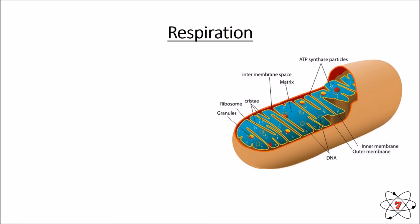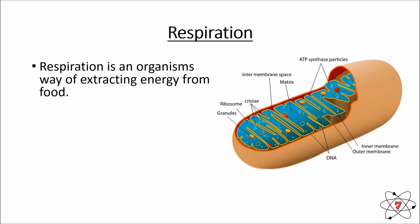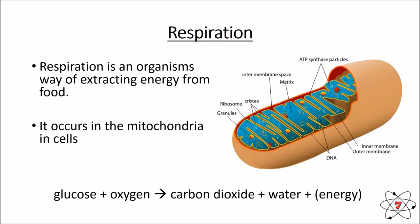Respiration. All living things have a chemical reaction called respiration. Respiration is an organism's way of getting the energy we need from our food. That food normally comes in the form of glucose. It always happens in the mitochondria. The chemical reaction of respiration always follows this pattern: glucose plus oxygen makes carbon dioxide and water, and most importantly, energy.